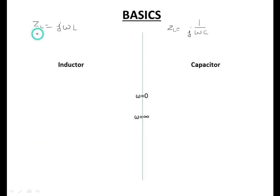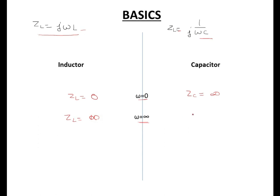Now we know that impedance for inductor is jωL and impedance for capacitor is 1/jωC. If we put ω = 0, then Z_L becomes 0 and Z_C becomes infinite. When we put ω = infinite, then Z_L becomes infinite and Z_C becomes 0. Impedance equal to 0 means short circuit and impedance equal to infinite means open circuit.